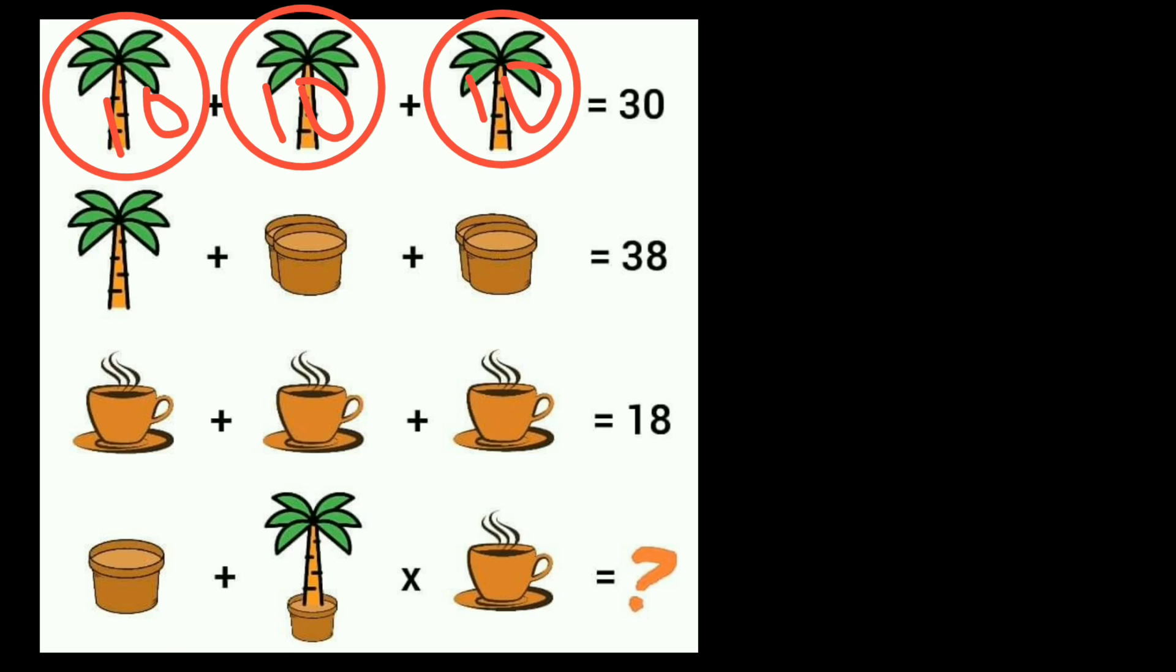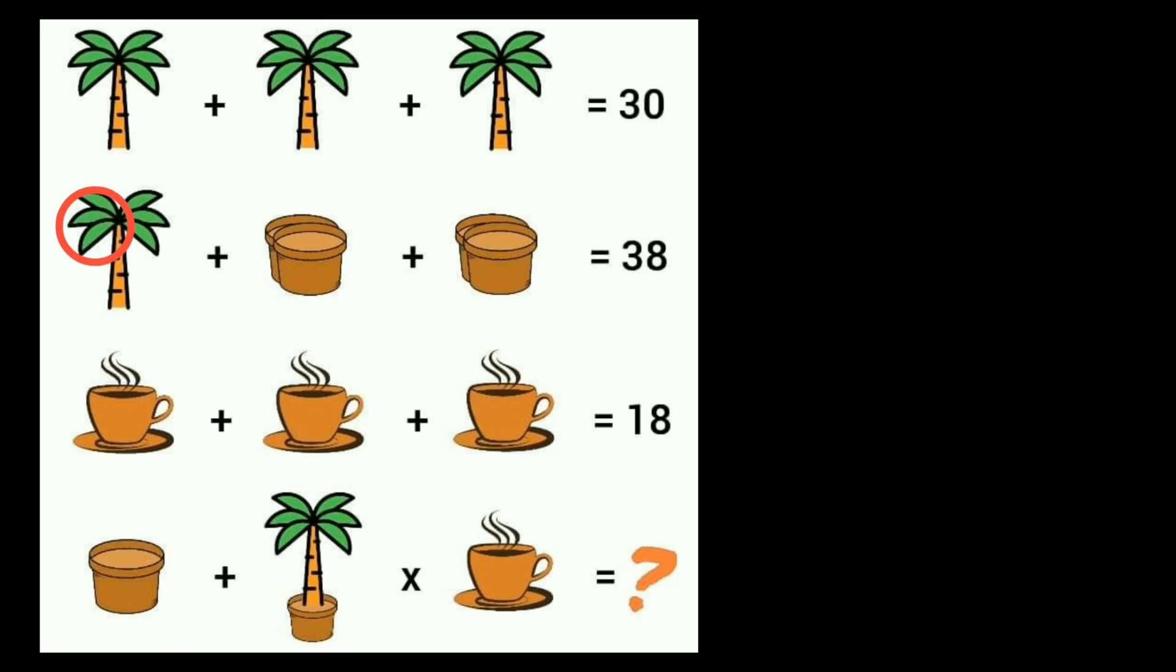Now look at the second equation. You can see here is one tree and two flower pots. The value of the tree is 10. Here are two flower pots, and here also two flower pots. We need 38. From 38, if you subtract 10, the remaining 28 means the value of these two pots is 14, and these two pots are also 14. 14 plus 14 plus 10 equals 38. The value of two flower pots is 14.